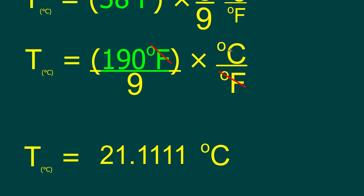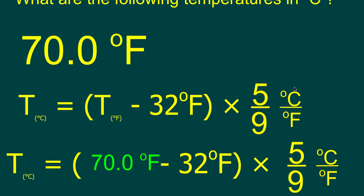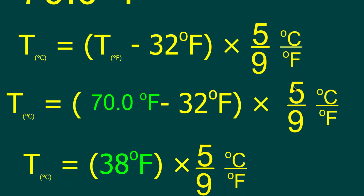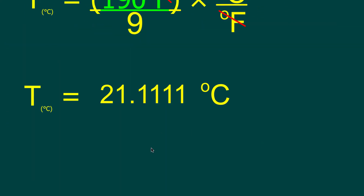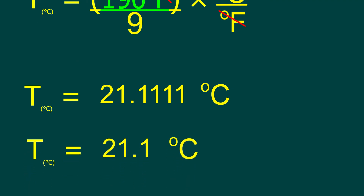So there's our degrees Celsius. If we go back and look at our original question, it was 70.0 degrees Fahrenheit — that's three significant digits, which means our final answer can only be three significant digits. So we can't have 21.111 — too many significant digits. Our final answer will be 21.1 degrees Celsius.